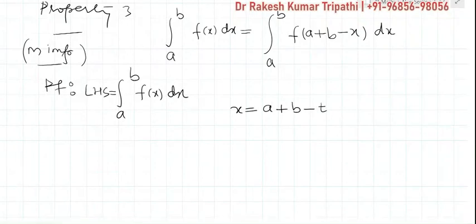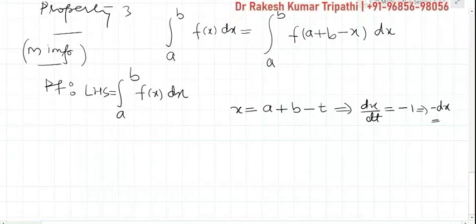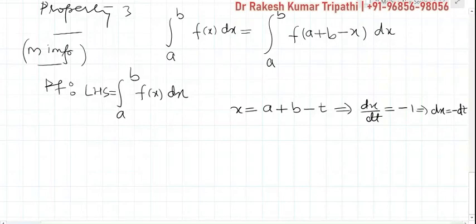We put x = a + b − t. On differentiating both sides, dx/dt = −1, which implies −dx = dt, or dx = −dt. So we shall replace dx by −dt.